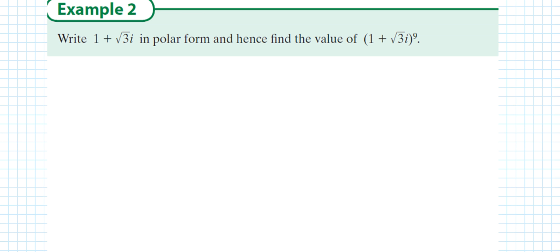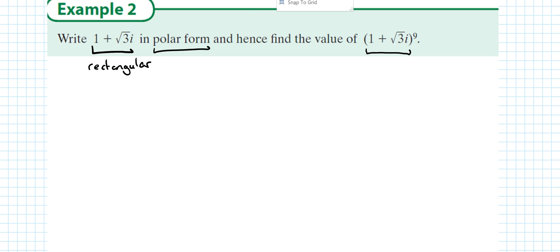In the next question, they give us a number in rectangular form and want us to change it to polar form, and hence find the value of (1 + √3 i) to the power of 9. Remember, with a big power like 9, you're never going to multiply out nine brackets — that's how you know to use polar form and De Moivre's Theorem.